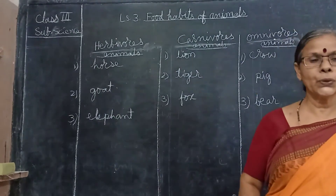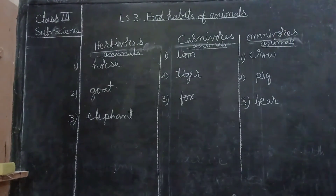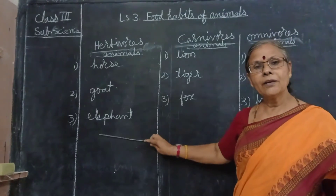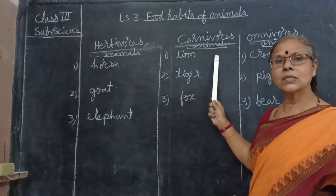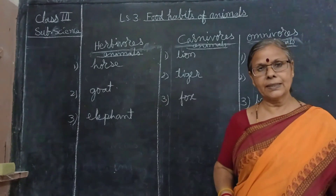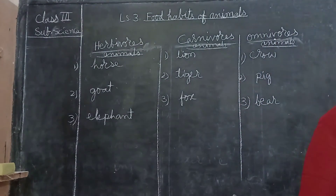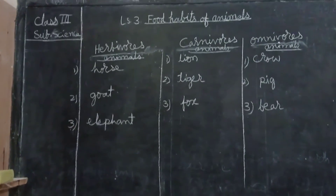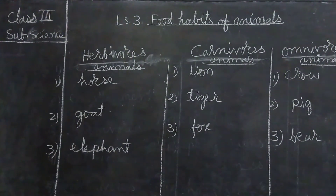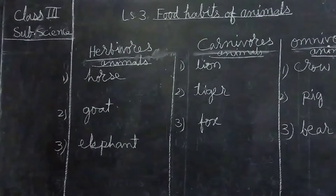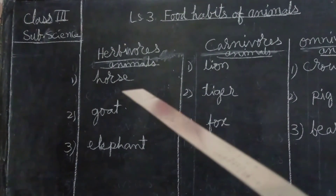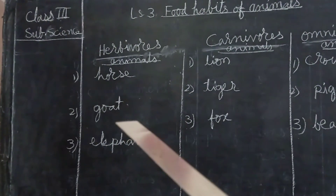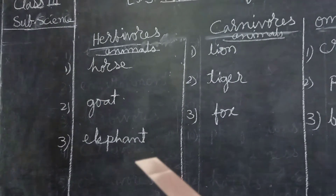Once again I will show you. You can see how they are done and write in your notebook also. If the space is not sufficient, you can write herbivores and carnivores on one page and omnivores on the next page. Herbivores animals: horse — H-O-R-S-E, goat — G-O-A-T, elephant — E-L-E-P-H-A-N-T.